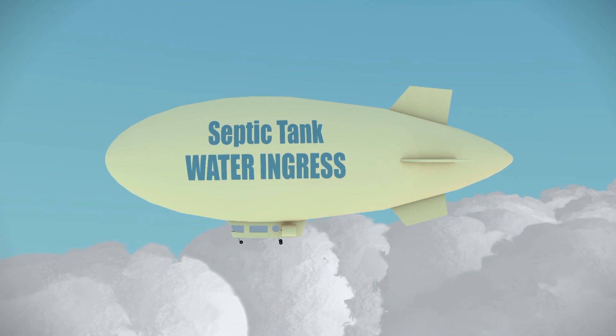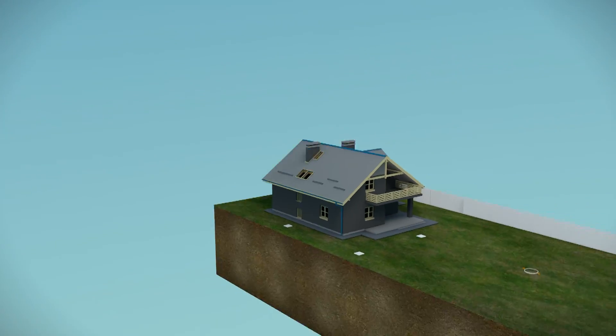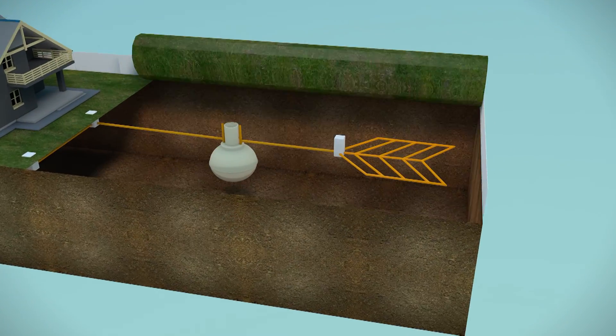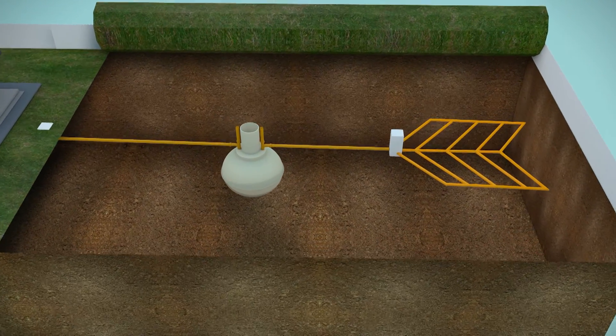The purpose of a septic tank is one of settlement and separation. This process is most effective when the septic tank is in a state or period of inactivity.